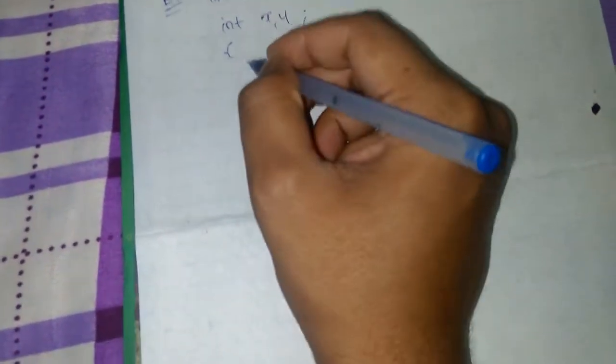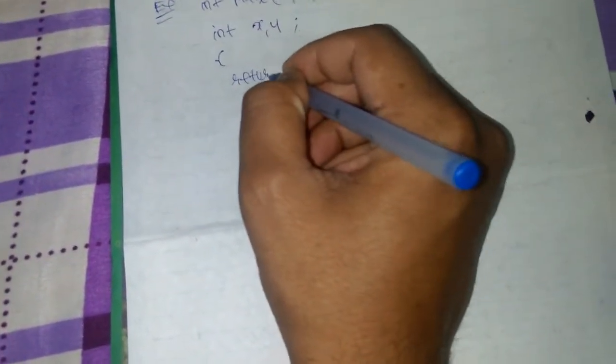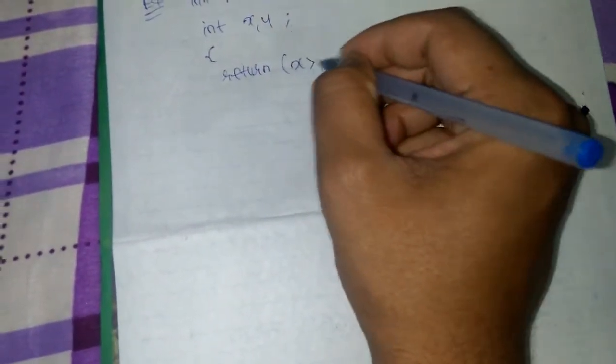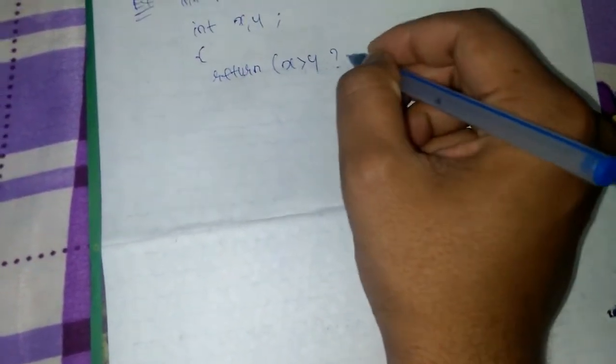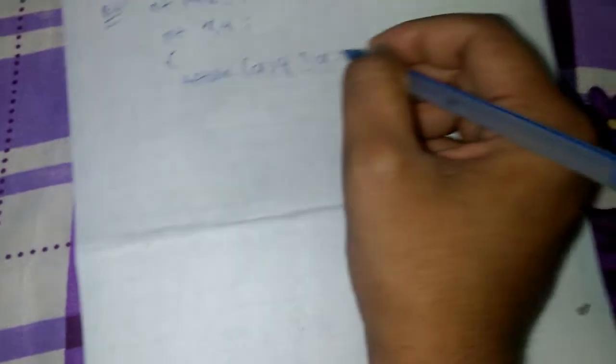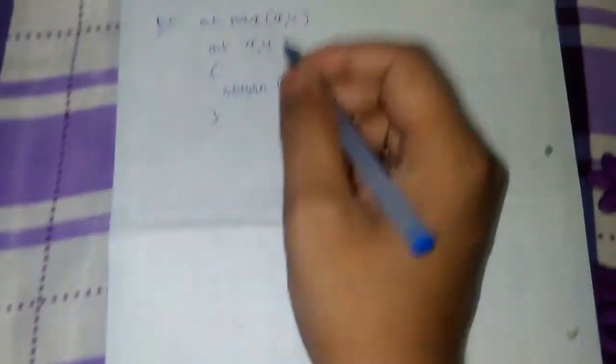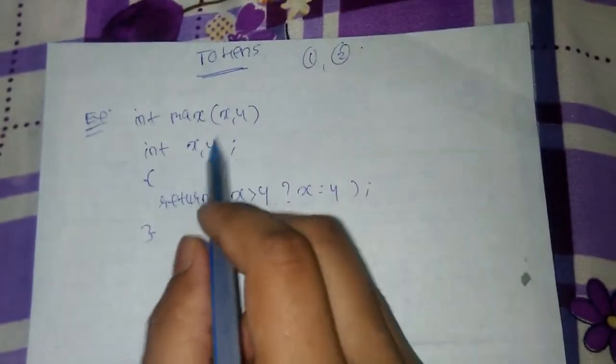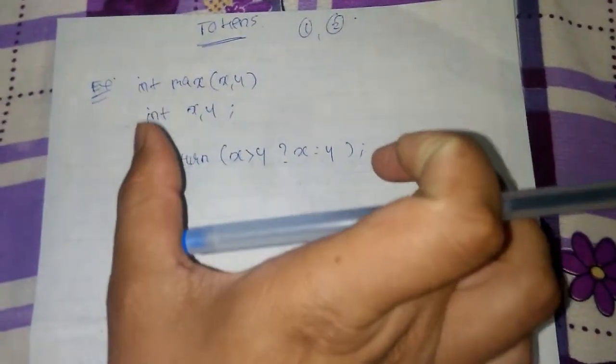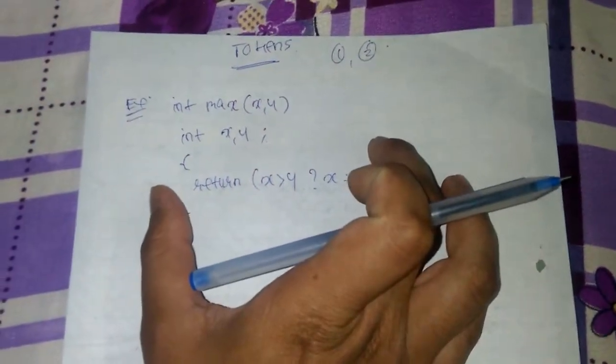So basically this is our example, and suppose if such a question is given as an example and suppose you are asked to find the number of tokens in this.